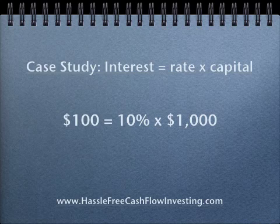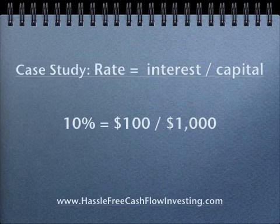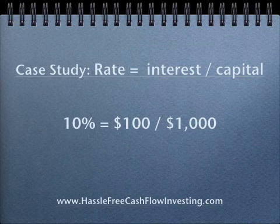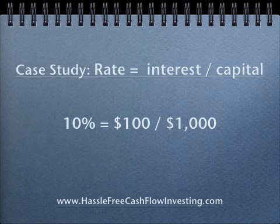Let's do a little case study. If we know the interest rate is 10% and the amount of capital is $1,000, then the annual amount of interest paid would be $100 — pretty simple. If we're figuring out the rate and we know the interest and the capital — for example, I want to make $100 and I have $1,000 — then what rate of return do I need to generate? That's how you would use this formula.